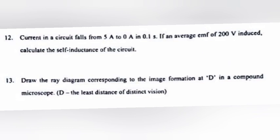Question 12: Current in a circuit falls from 5 Ampere to 0 Ampere in 0.1 second. If an average EMF of 200 V induced, calculate the self-inductance of the circuit.